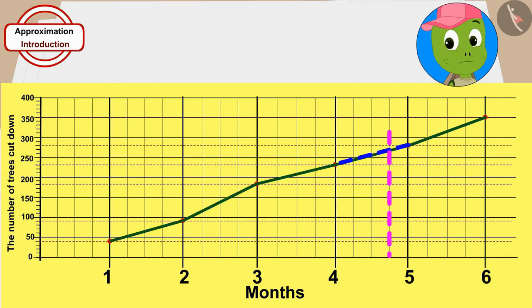where the vertical line of the 3rd week of the 5th month is meeting with this line. From that point, I can approximate that in the 5th month, how many trees will be cut in total by the end of the 3rd week.